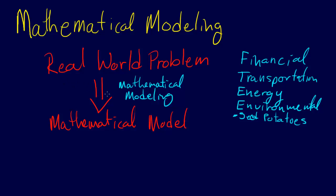When we do mathematical modeling, we have to make certain assumptions and we have to make approximations. Mathematical modeling is just moving from the real world problem to a mathematical model by making certain assumptions and approximations, but still grasping the essence of the real world problem.